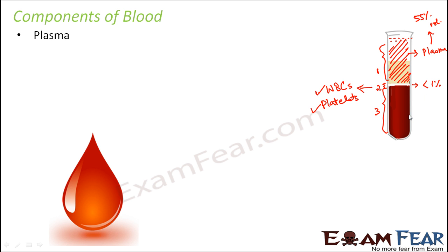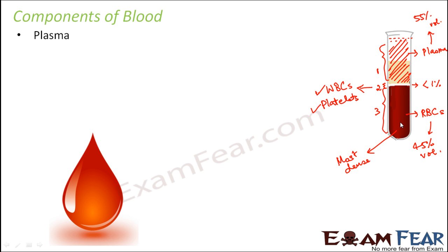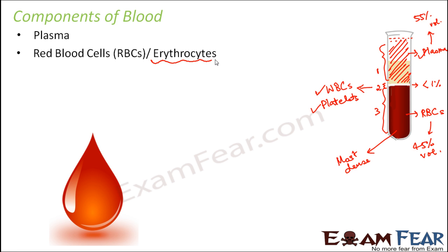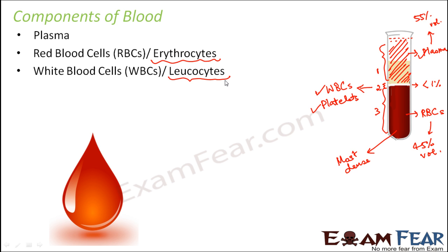The third layer, which was red in color, consisted of red blood cells (RBCs), constituting almost 45 percent of the total volume. RBCs were the most dense of all components, which is why they are at the bottommost layer. So blood consists of four important components: plasma, red blood cells or erythrocytes (RBCs), white blood cells or leukocytes (WBCs), and platelets also called thrombocytes.